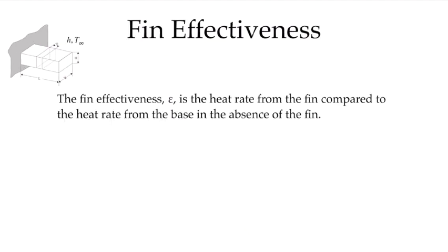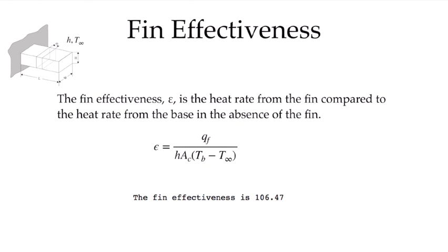The first performance parameter is the fin effectiveness, which is the heat rate from the fin compared to the heat rate from the base area in the absence of the fin — that is, if we had just the cross-sectional area at the base convecting with H and T infinity. Mathematically, the fin effectiveness is QF divided by H times the cross-sectional area times the temperature difference between base and ambient. This number must be greater than 1, otherwise the fin is making heat transfer worse. In this example for the convective tip case, the fin effectiveness is 106.